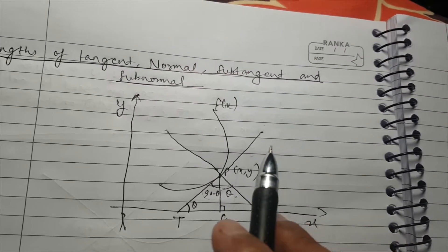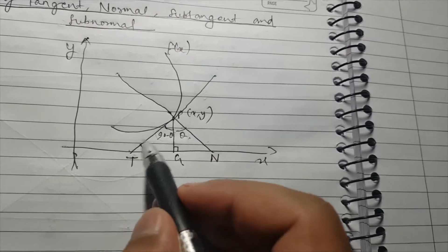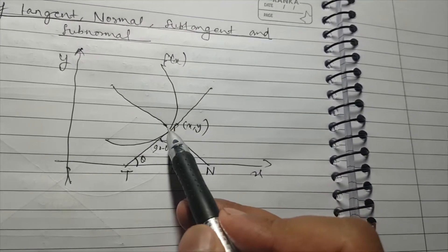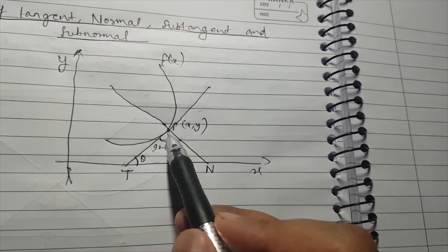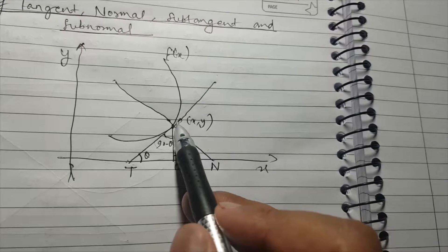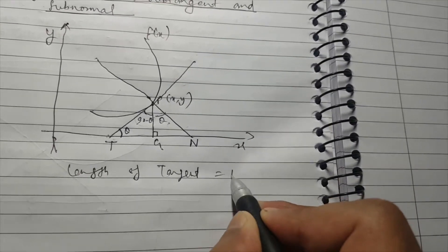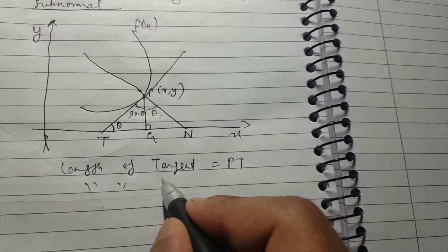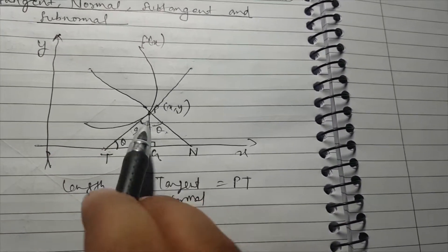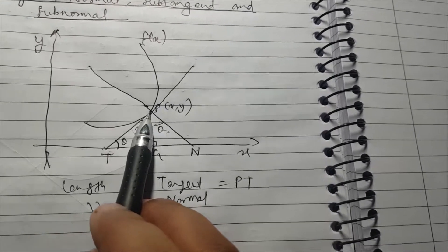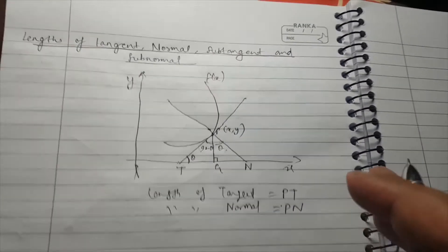Now I will tell you what is the length of tangent, normal, sub-tangent, and sub-normal. The length of the tangent is PT — from the point where the tangent touches the curve down to the x-axis. Similarly, the length of the normal is PN — from point P to point N on the x-axis.